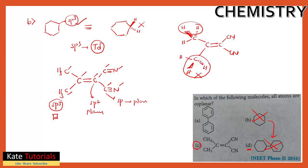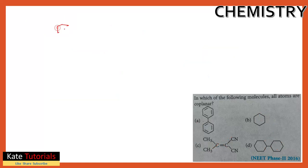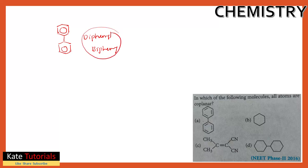So options B, C, and D are not coplanar. Option A should be coplanar. As discussed, benzene has all sp2 hybridization. Option A is biphenyl — two benzene rings linked together. All carbons are sp2 hybridized, so all atoms lie in the same plane.